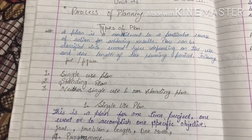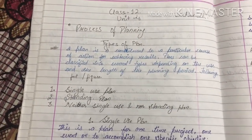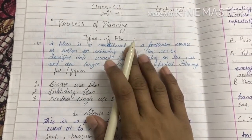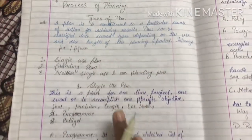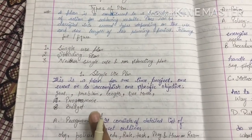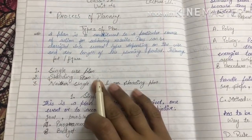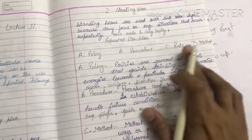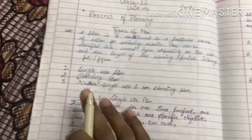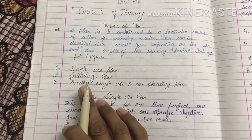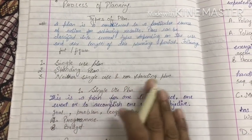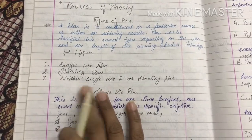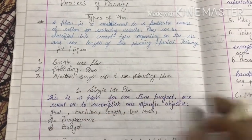So students, today we are done with the topic of Unit 4, that is types of plan. In this we have discussed single use plan, जिसमें हमने discuss किया program and budget. Next we have standing plan, जिसमें हमने cover किया policy, procedure, rules and methods. And last but not the least, neither single use nor standing plan, जिसमें हमने cover किया strategies and objectives. That's it for the day.